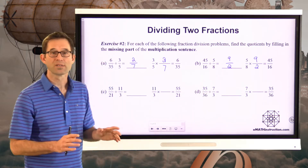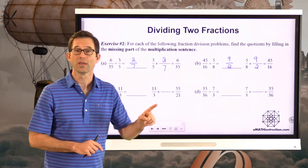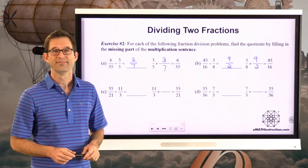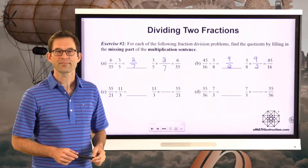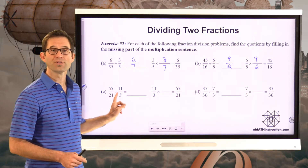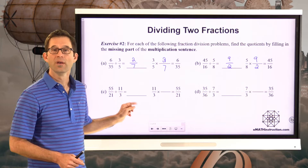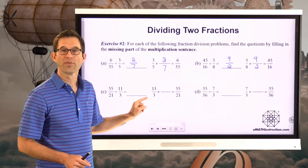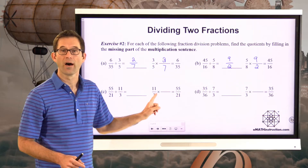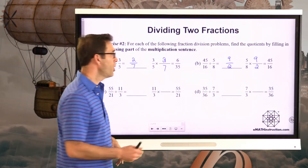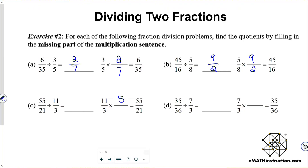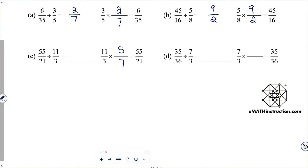Now take a moment to figure out letter C and letter D. In letter C: 55 twenty-firsts divided by eleven-thirds. What do I have to multiply eleven-thirds by to get 55 twenty-firsts? Eleven times 5 is 55, and 3 times 7 is 21. So the answer must be five-sevenths.